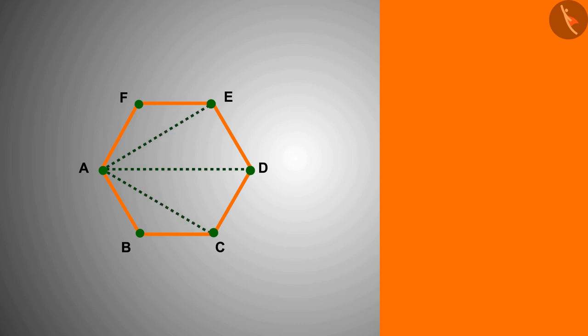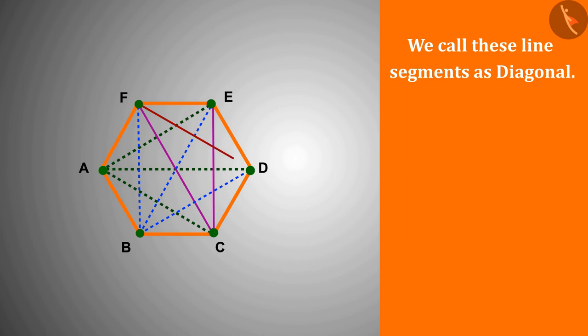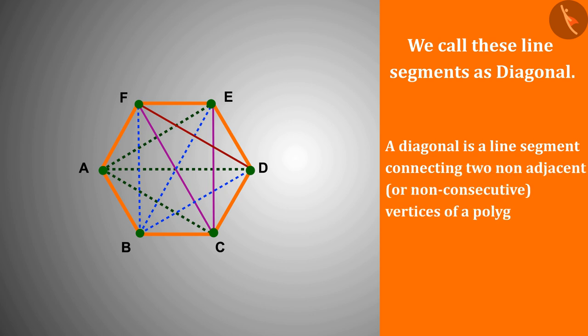By doing this with all the vertices of this hexagon, we get some line segments. We call these line segments as diagonal. Therefore we can say that the diagonal of a polygon is formed by connecting any two vertices except adjacent vertices.